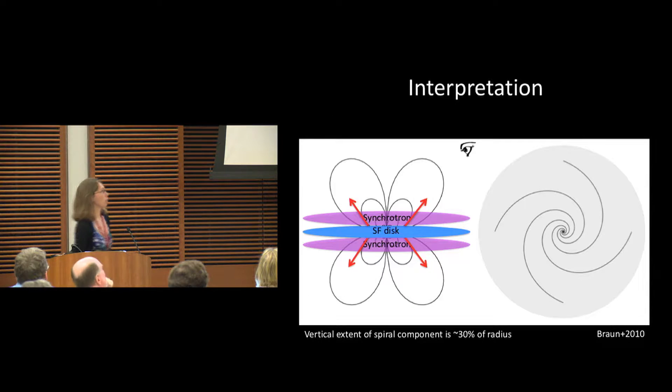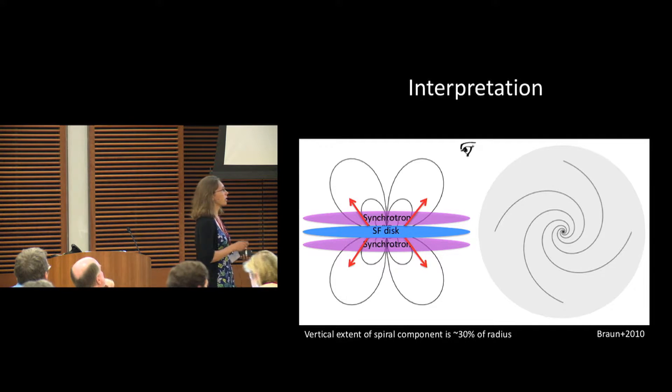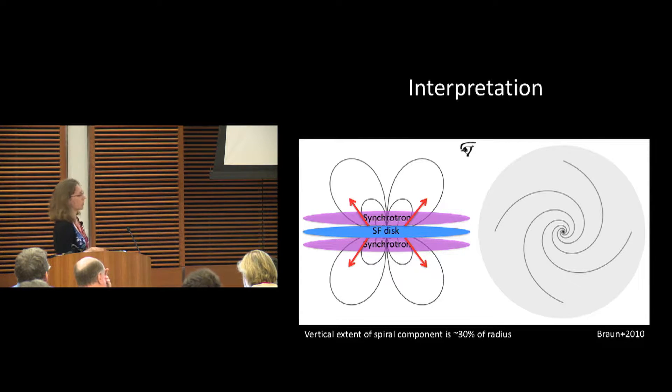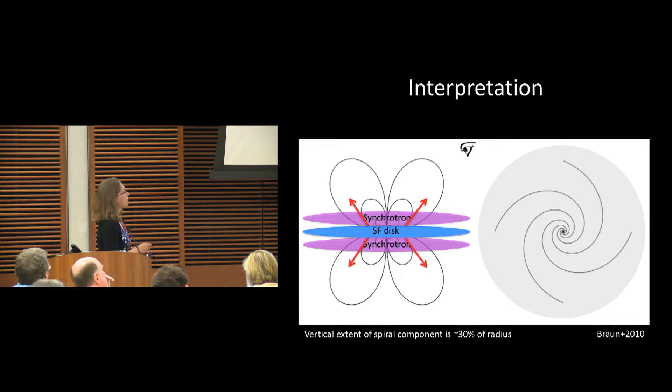They came up with this model to describe these observational trends, and what they found was that an axisymmetric disk or spiral in the disk can explain this along with a quadrupolar halo structure in the magnetic field.